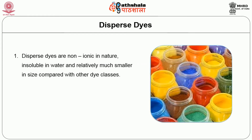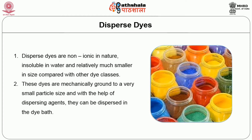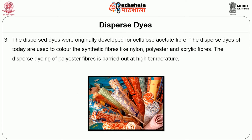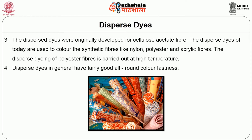Dispersed dyes are non-ionic in nature, insoluble in water, and relatively much smaller in size compared with other dye classes. These dyes are mechanically ground to a very small particle size and, with the help of a dispersing agent, can be dispersed in the dye bath. The dispersed dyes were originally developed for cellulosic acetate fibers. Today they are used to color synthetic fibers like nylon, polyester, and acrylic. Dyeing polyester fiber is carried out at high temperature — around 135 degrees Celsius — and another method is the thermosol process at approximately 230 degrees Celsius. Dispersed dyes generally have fairly good all-round color fastness.